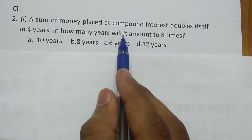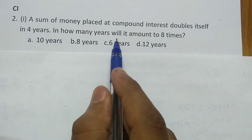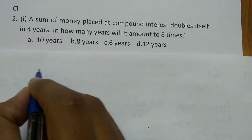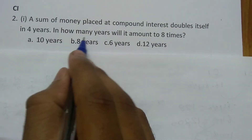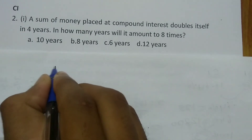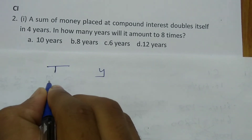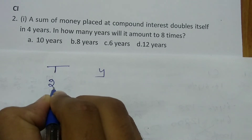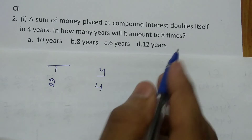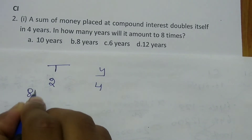A sum of money placed at compound interest doubles itself in 4 years. In how many years will it amount to 8 times itself? So we have: 2 times in 4 years. The question is in how many years it will amount to 8 times.